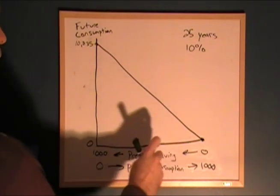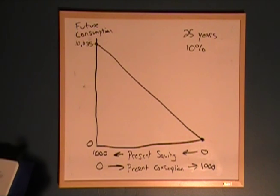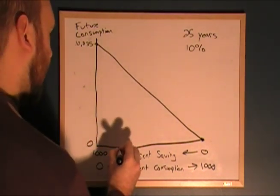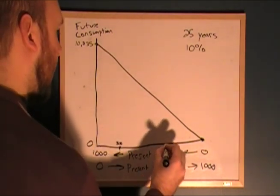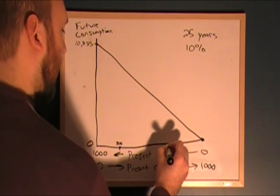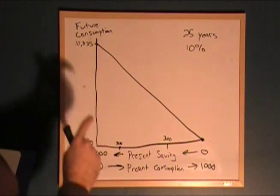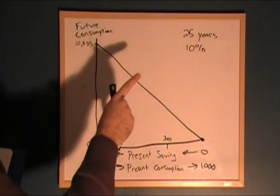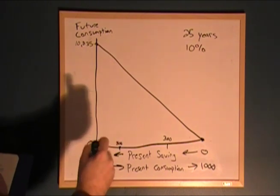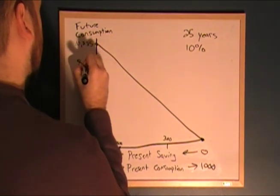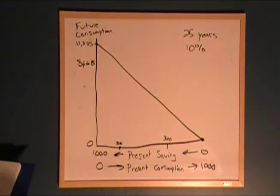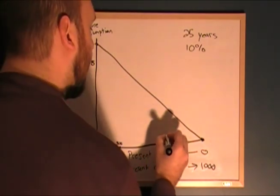Now we'll take a look at a couple other points on the present savings and present consumption line. We're going to see what we're looking at if we save $800, and what happens when we save $300. If we save $800 for 25 years at 10% interest, we're going to walk away with $8,668. If we were to save $300 for 25 years at 10% interest, we'll walk away with $3,250.